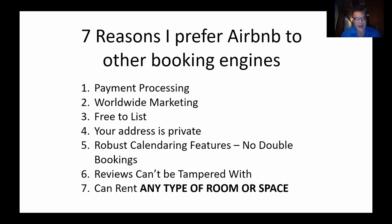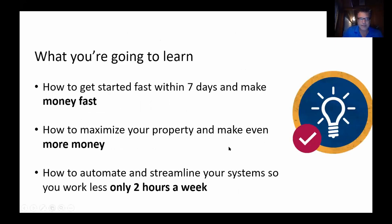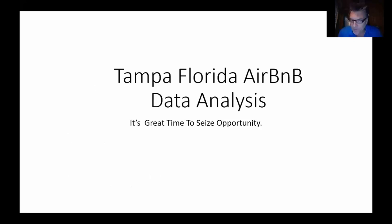Another thing Duncan likes is that you can rent any type of room or space on Airbnb — a tent, an RV, a room, a yurt, a castle, a tree house — anything where a person can stay. It gives you a lot of different opportunities. What we're going to learn in the next 60 minutes: how to get started within seven days and make money fast, even if you don't own any property; how to maximize and make more money than everybody else on Airbnb; and how to do this working only two hours a week. This really is an ideal business that's going to keep performing and generating cash flow.